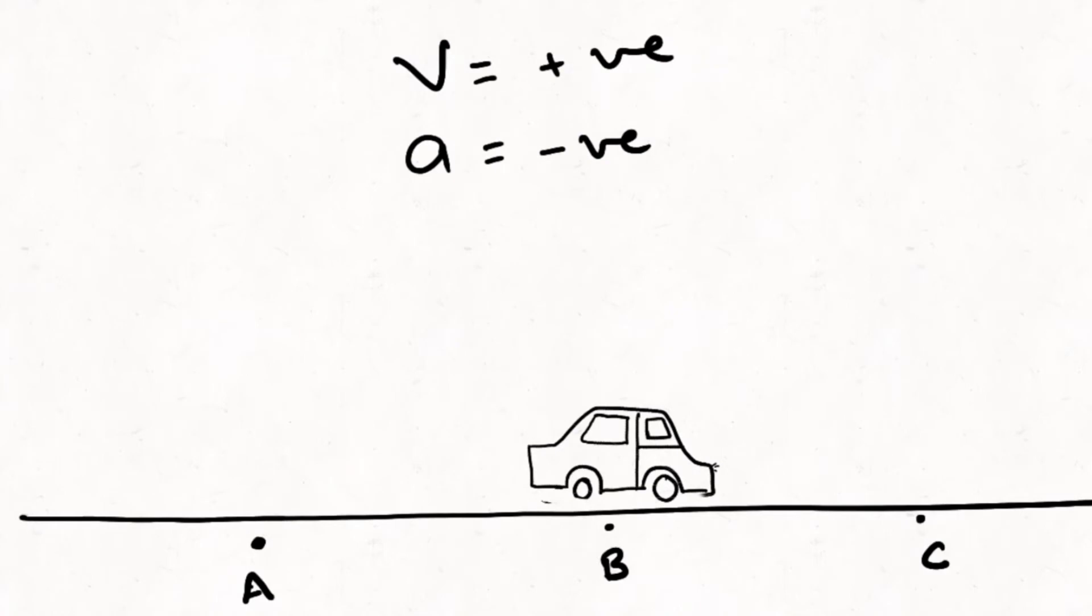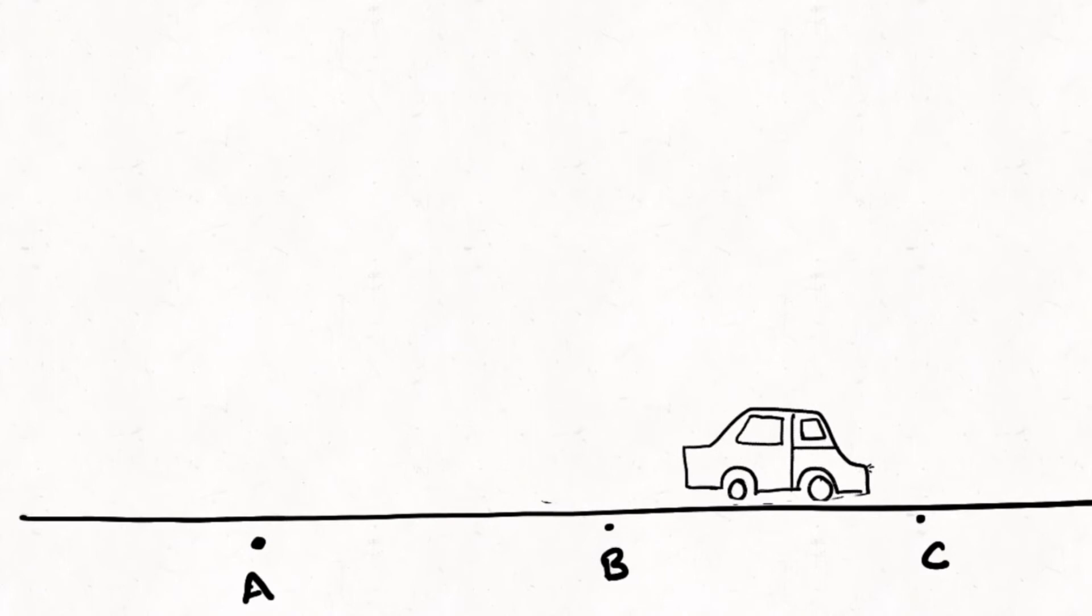From this point onwards, the acceleration becomes negative and the velocity will still be positive. The velocity will reduce and that is why acceleration will be negative. Acceleration is change of velocity, so if the velocity is decreasing, acceleration will be negative. The car will go on, it will keep slowing down.